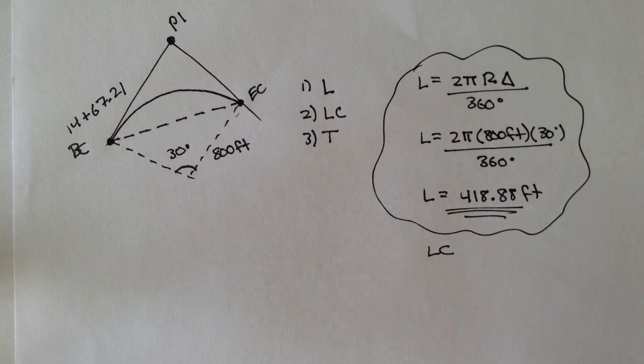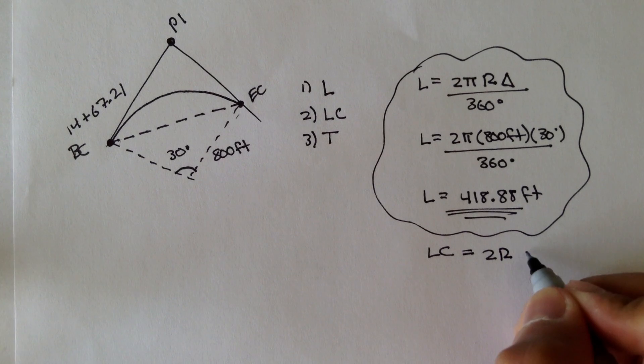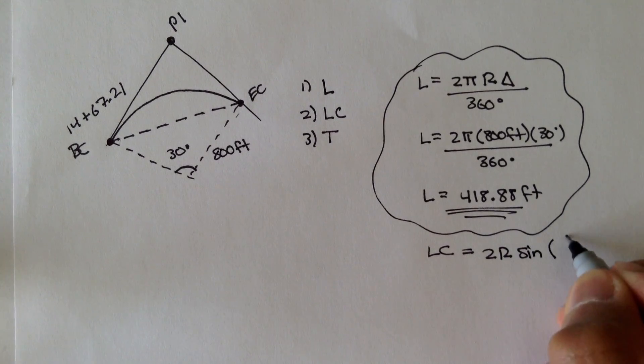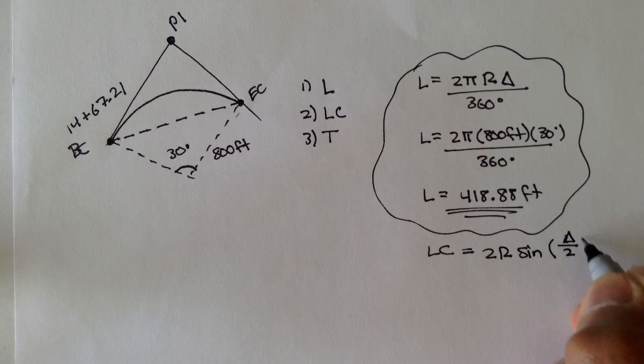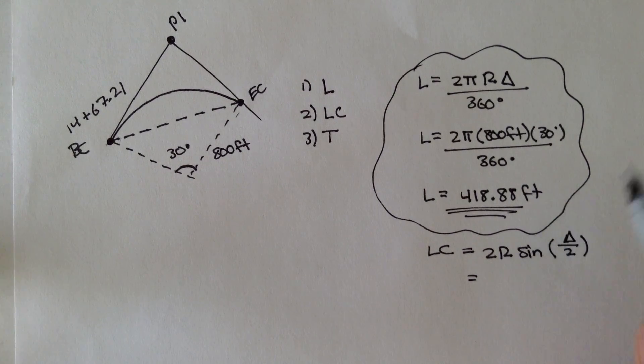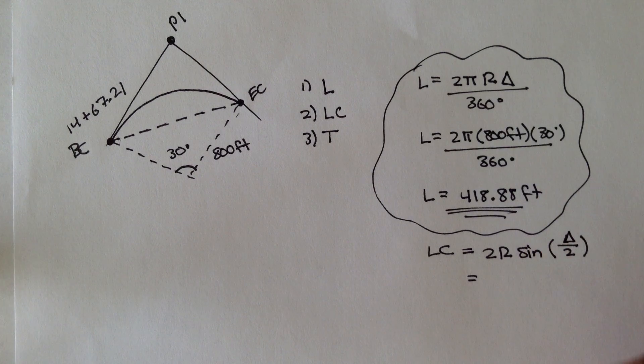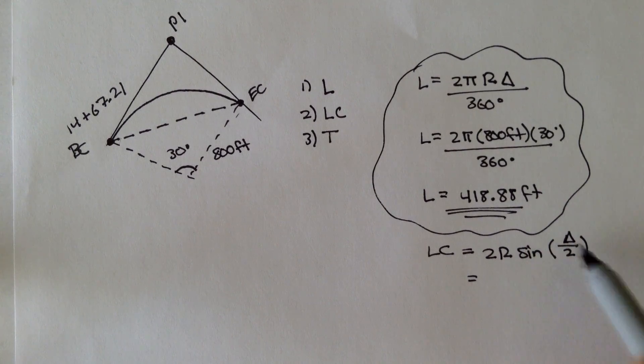The long cord, our formula for our long cord, or LC, is 2 times R sine of the interior angle over 2. And again, we can plug this in. Notice that for the long cord and the length of the curve, we use the same parameters, R and delta. There's no other variables here.